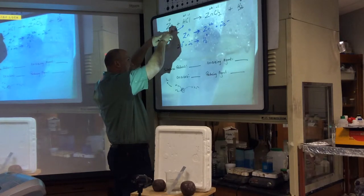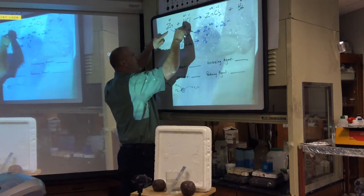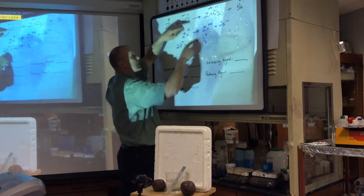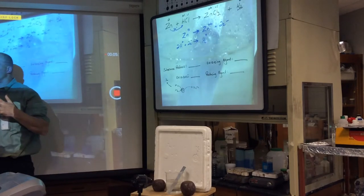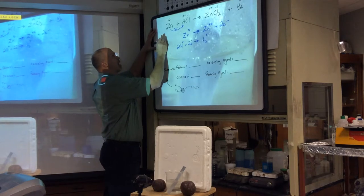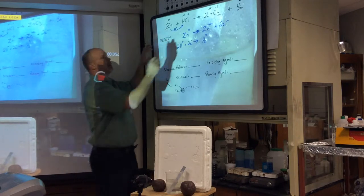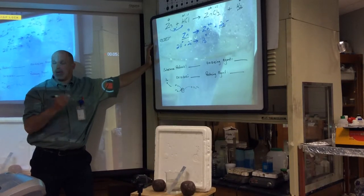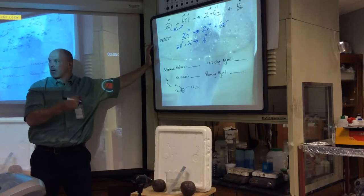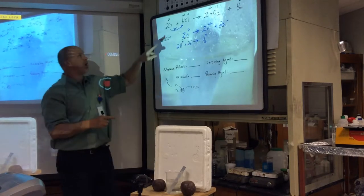Whoever loses the electron got oxidized; whoever accepts it gets reduced. I write out the elements and their ions that change. Zinc is on the reactant side. H is plus one; H zero is on the other side. I pulled apart the reaction — the half that is giving is called the oxidation half reaction. If you forget what oxidation means: Leo the lion says GRR — Leo is losing electrons. The electrons are on the product side.